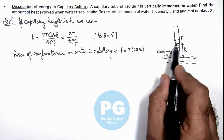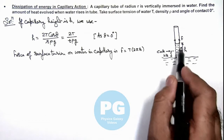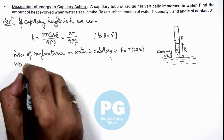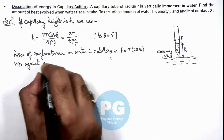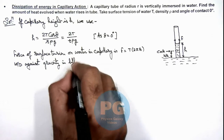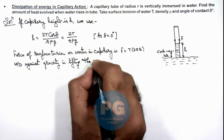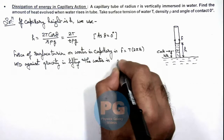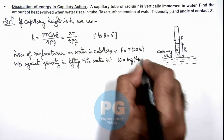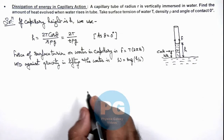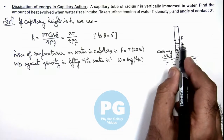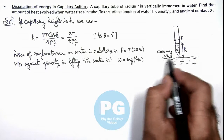So the work done against gravity in lifting the water to a height h will be mgh by 2, since the center of mass is at height h by 2. The work done by the force of surface tension is F multiplied by h, and the work done against gravity is mgh by 2.